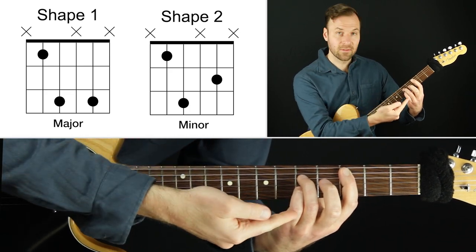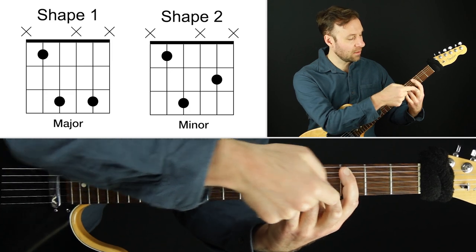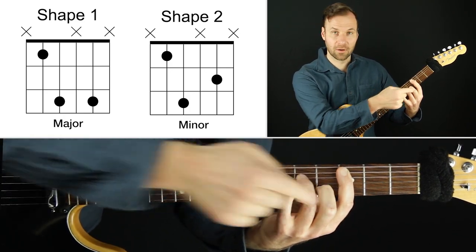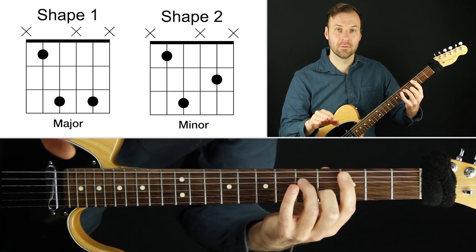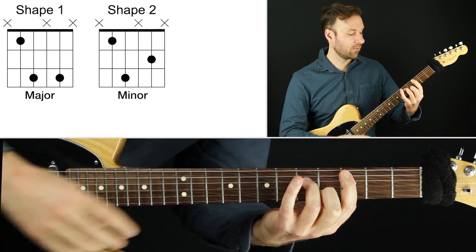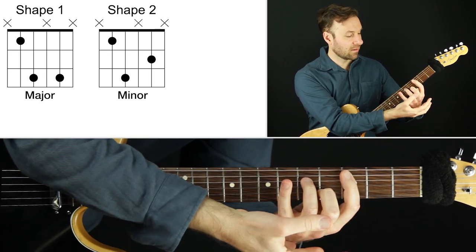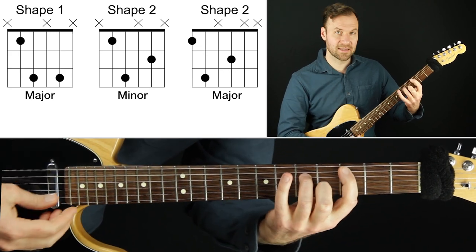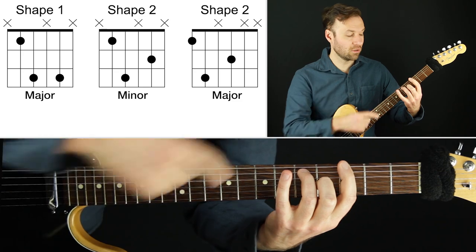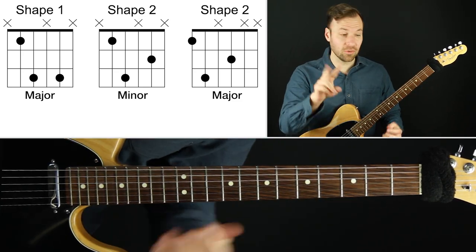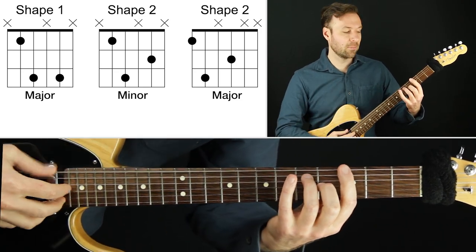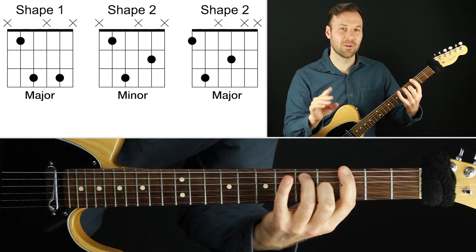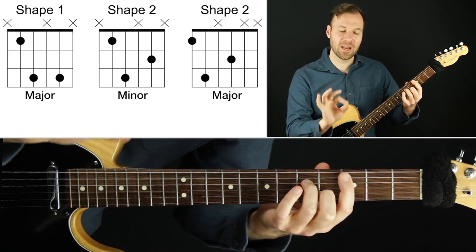Shape number two: take the top note and replace your pinky with your middle finger — and now we get a minor chord. Shape one was major; now with first finger, third finger, and middle finger, we have the minor shape. Shape two can also be used off the sixth string: move all the fingers down one string and now it becomes a major shape. So shape two is minor when the root is on the fifth string, and major when the root is on the sixth string. That will help so you don't have to jump all around. Be patient with the technique and it will pay off.